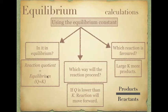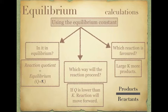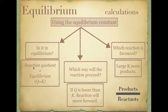Is our reaction in equilibrium? We can tell if our reaction is in equilibrium because the reaction quotient Q is equal to the equilibrium constant K. That means our calculated Q value equals our theoretical K value. We test out the concentrations we have and compare it to the known K value for that reaction.